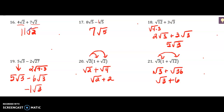Number 17: 8 square roots of 5 take away 1 square root of 5 is just 7 square roots of 5. Number 18: I simplified the square root of 12 by breaking it into 4 times 3. The square root of 4 is 2, so you have 2 square roots of 3 plus 3 square roots of 3, which is now 5 square roots of 3.